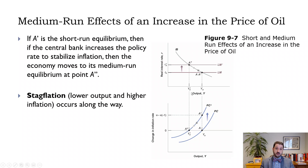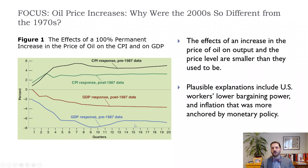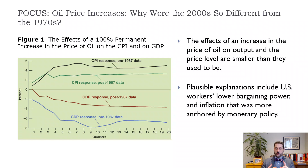We do get back to a natural level of output, but it's a new natural level of output. The important question is: did something permanent change, or do we get back to our original natural level? This brings us to why the 2000s were so different from the 1970s. This is roughly an estimate of the effect of a 100 percent increase in the price of oil — a doubling — on the CPI and on GDP.